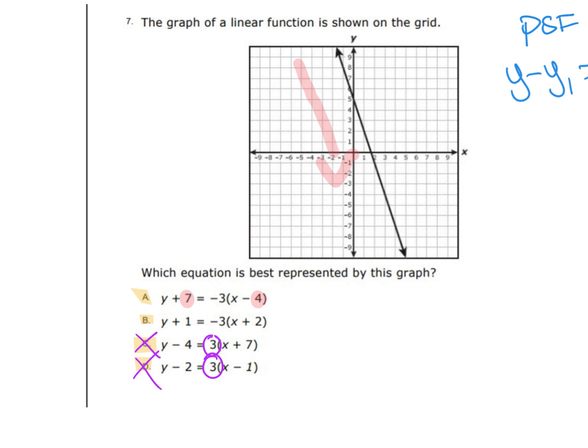So inside I have a negative 4, but when I pull this out, I'm going to have a positive 4 for an x. Inside I have a positive 7, but when I pull it out, I'm going to have a negative 7.